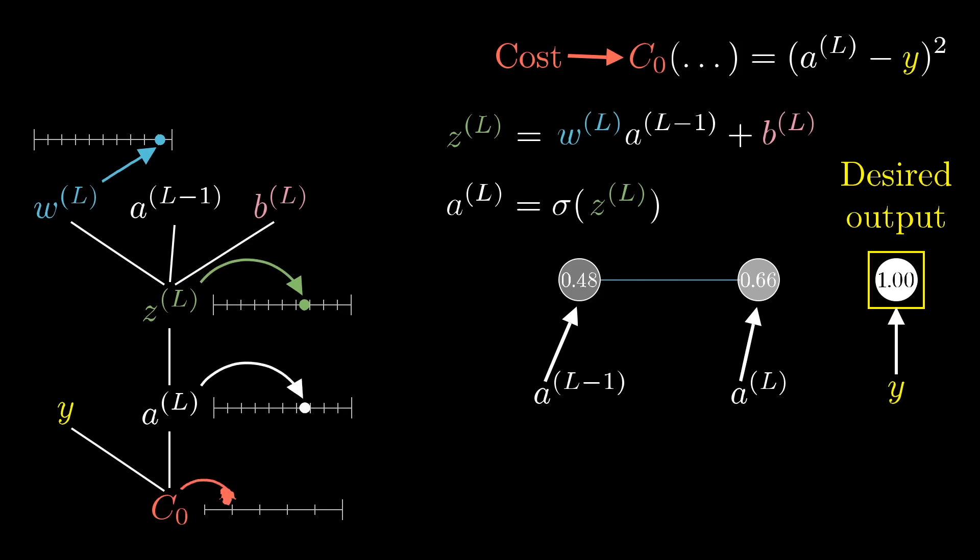Our first goal is to understand how sensitive the cost function is to small changes in our weight, w^l. Or phrased differently, what is the derivative of c with respect to w^l? When you see this del w term, think of it as meaning some tiny nudge to w, like a change by 0.01, and think of this del c term as meaning whatever the resulting nudge to the cost is. What we want is their ratio.